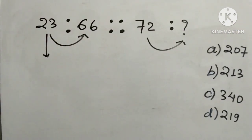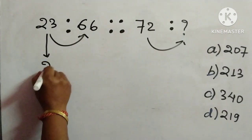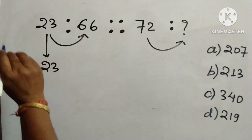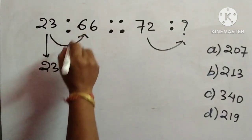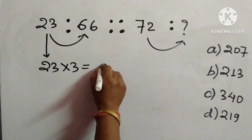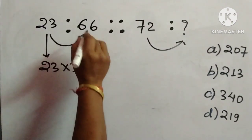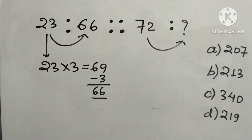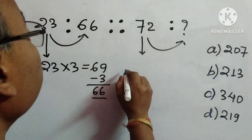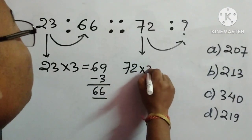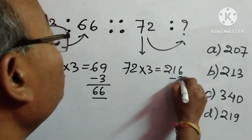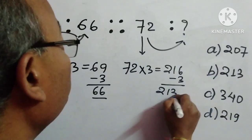We will consider 23 and try to get 66 out of it. If we multiply 23 by 3, we get 69, which is close. Then we subtract 3 to get 66. We will adapt this same process here: pick 72 and multiply it by 3 to get 216, then subtract 3, giving us 213.